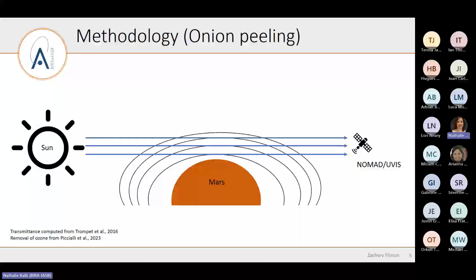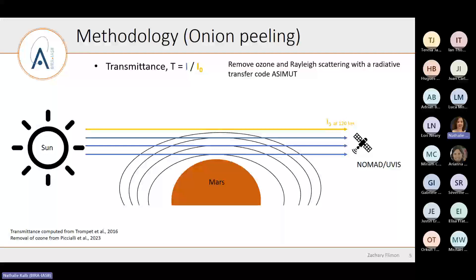The methodology I use to derive aerosols is the nadir peeling approach. We take the atmosphere, divide it into several layers, and with the sun here and our spacecraft, we take a spectrum outside the atmosphere at 120 kilometers — where we consider the atmosphere clear in the UV — and one going through the atmosphere. Dividing the spectrum through the atmosphere by the one outside removes all the solar spectrum, so we only get what is absorbed by the atmosphere. In the UV on Mars, only ozone absorbs at 250 nanometers along with some Rayleigh scattering, and we remove those using a radiative transfer code named Azimuth.